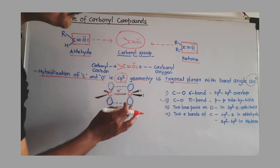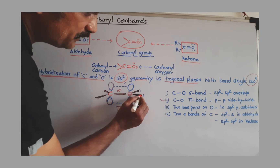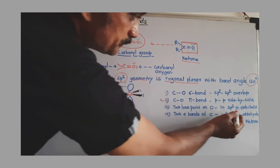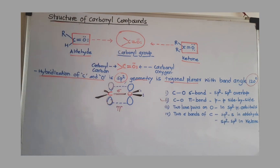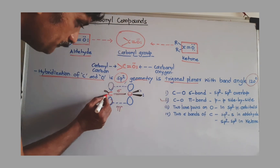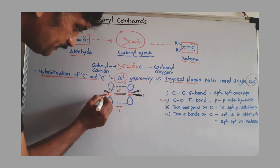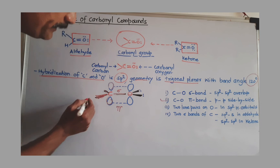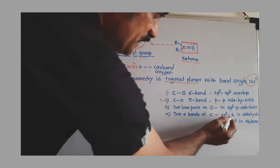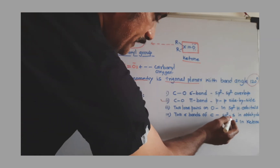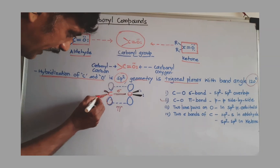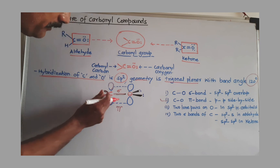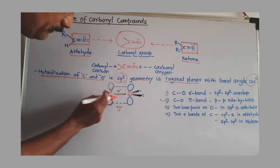Both lone pairs of electrons on oxygen are present in sp2 hybrid orbitals. The remaining two sigma bonds present on the carbonyl carbon can be explained as follows.